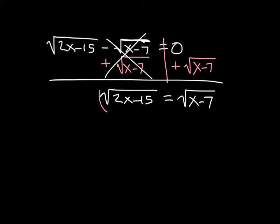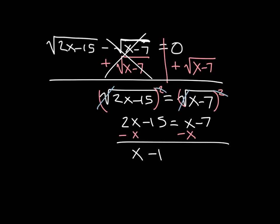Now we are ready to square both sides. The square root and the square cancel. We're left with 2x minus 15 equals x minus 7. And now we're ready to solve. I'm going to subtract x from both sides. And once again, I get 1x. This is not always the case, but it has been on these examples. We're going to add 15 to both sides. And x equals 8.